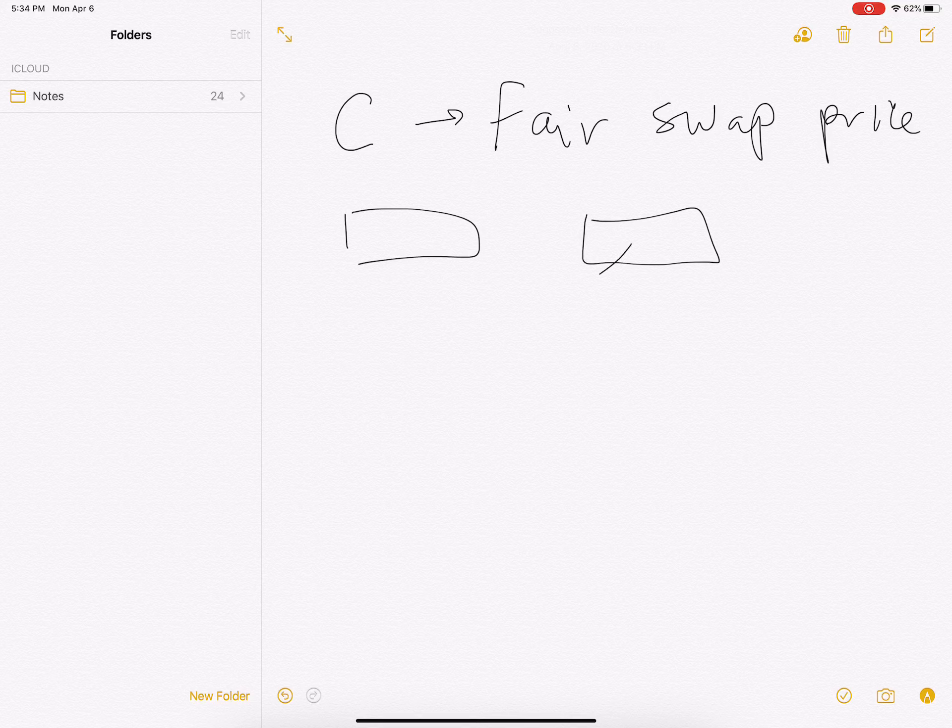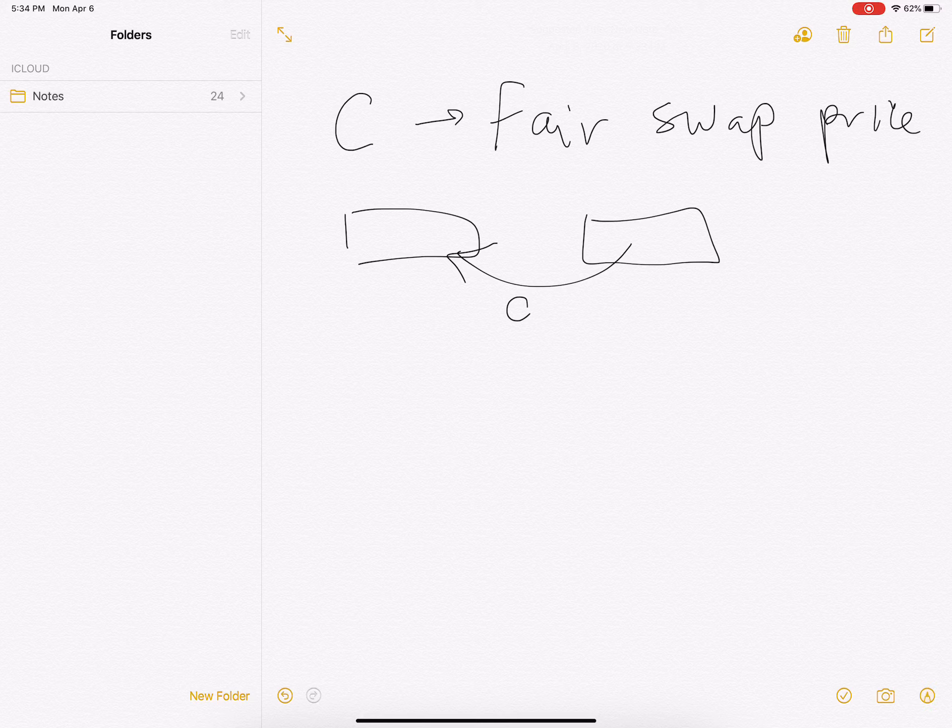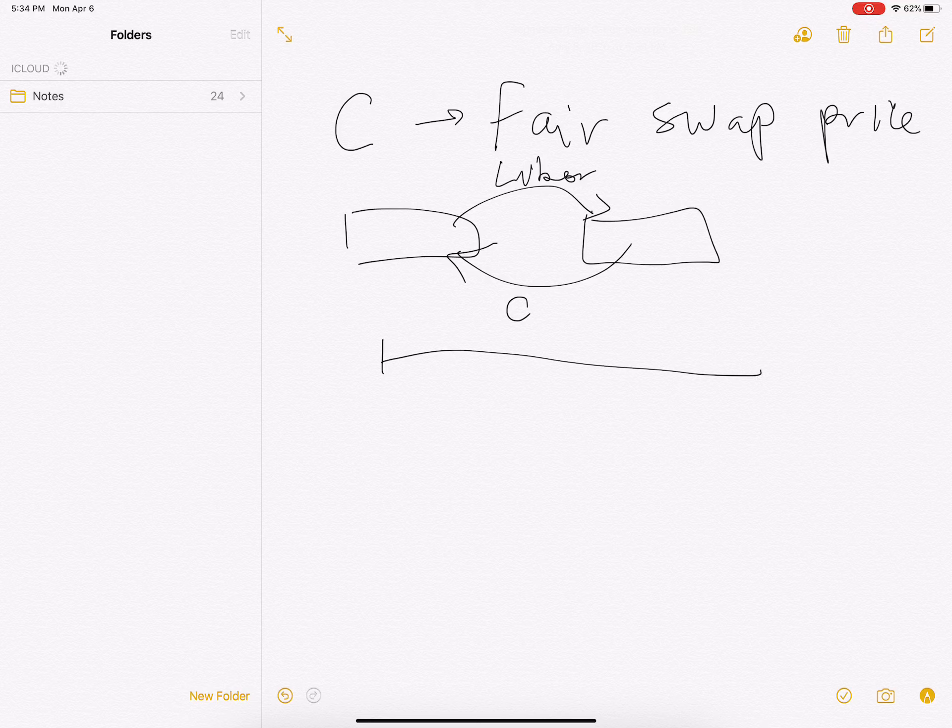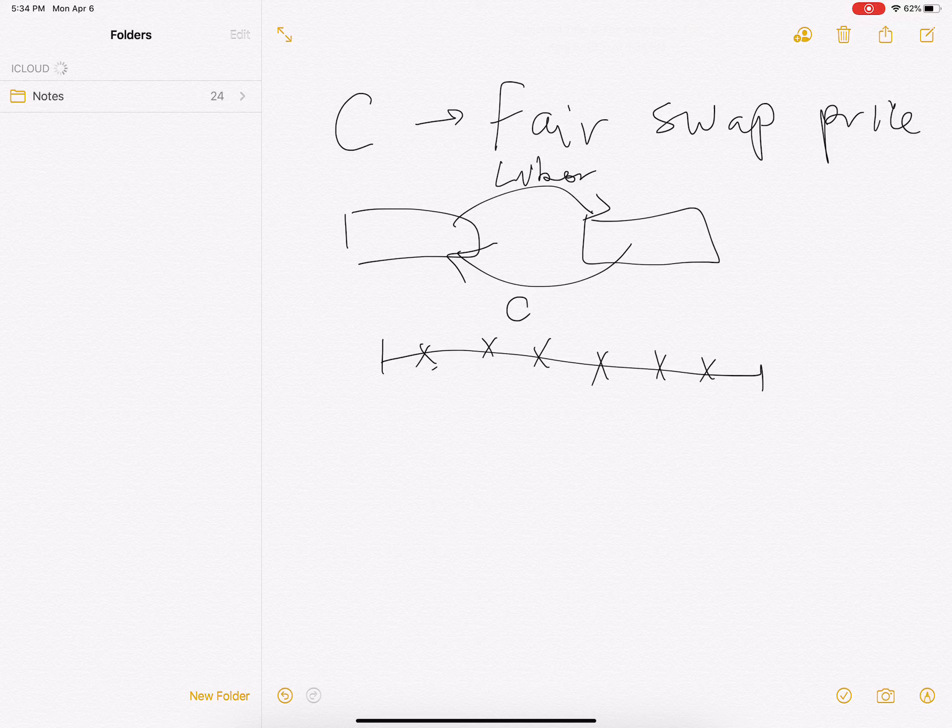We have two parties: the payer that pays the swap, the constant coupon, and the receiver that pays LIBOR. Say we have this kind of time horizon and we have swap periods here.